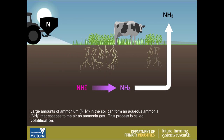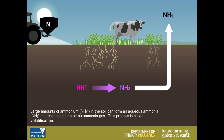Large amounts of ammonium in the soil can form an aqueous ammonia that escapes to the air as ammonia gas. This process is called volatilisation.